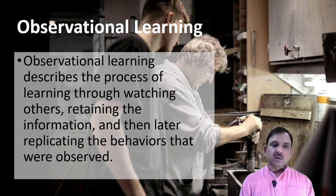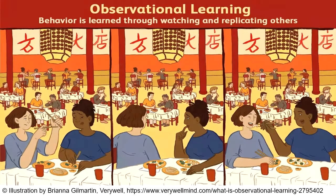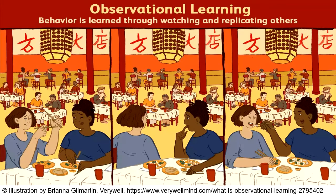Observational learning is a process that involves a lot of things. There is a cartoon illustration taken from Berryville on the website www.berrybuildmind.com, which reflects what observational learning is. Two people visit a restaurant and don't know how to eat with chopsticks, so they observe how others are using chopsticks and later start using them. Whatever behavior is learned through watching and replicating others comes under observational learning.